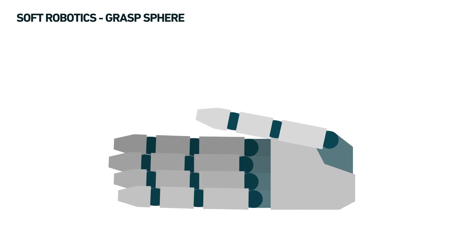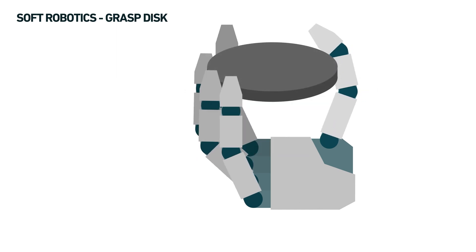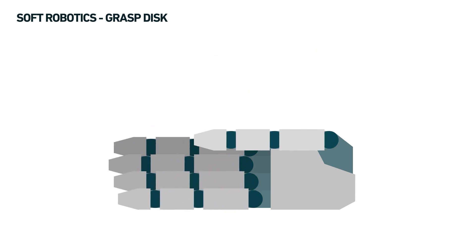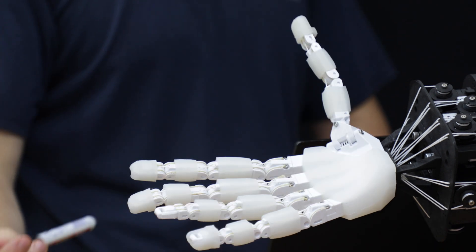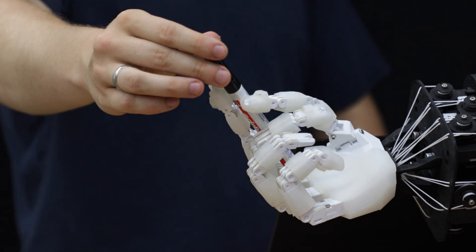Each grasp in the range between precision and power can be distinguished by the location of the thumb, either abducted or adducted. The categorization shows that a simple two-fingered gripper without a thumb isn't enough to replicate the dexterity of a human hand.